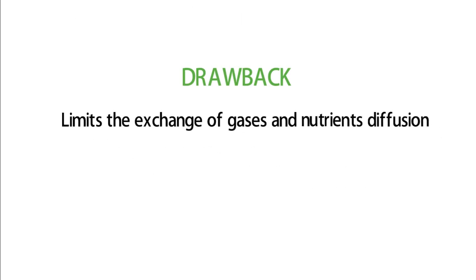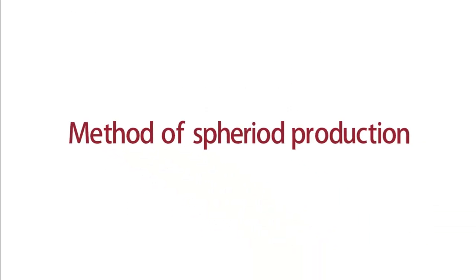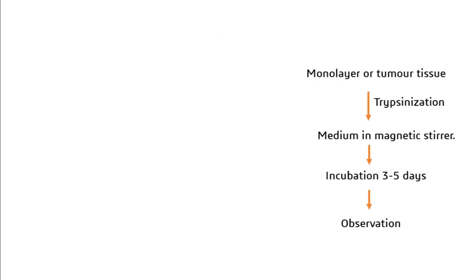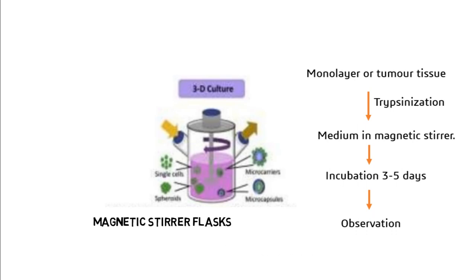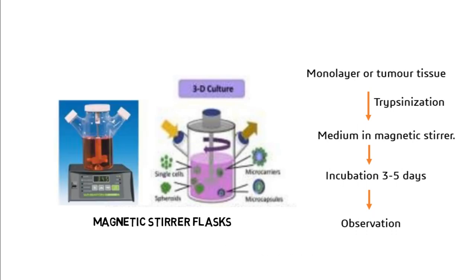The major drawback of spheroids is the limitation of diffusion of nutrients and gases. Coming to the method of spheroid production, single cell suspensions are obtained from trypsinization of monolayer cells or disaggregated tumors. These trypsinized cells are inoculated into the medium in a magnetic stirrer. After inoculation, the cells are incubated in the medium for about three to five days, and then aggregates of cells representing spheroids are formed. After the spheroids are formed, they are transferred to a 24-well plate for analysis.